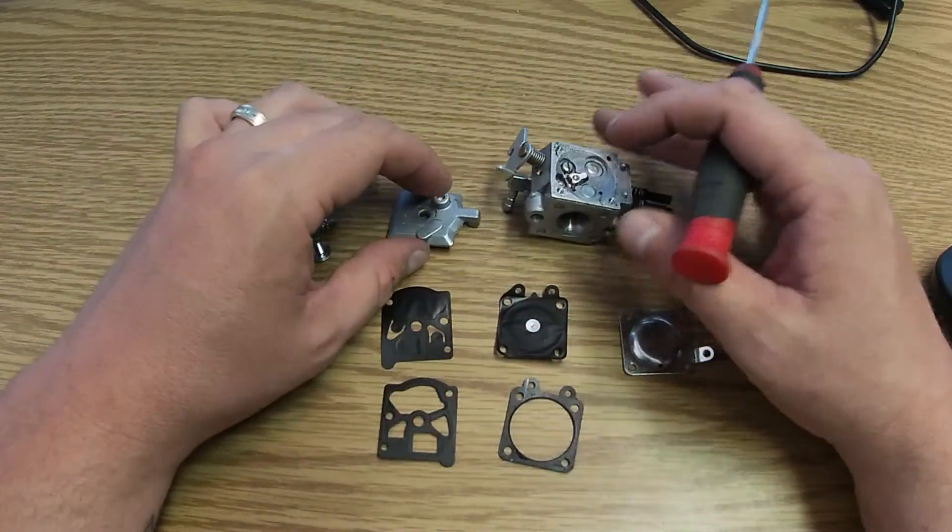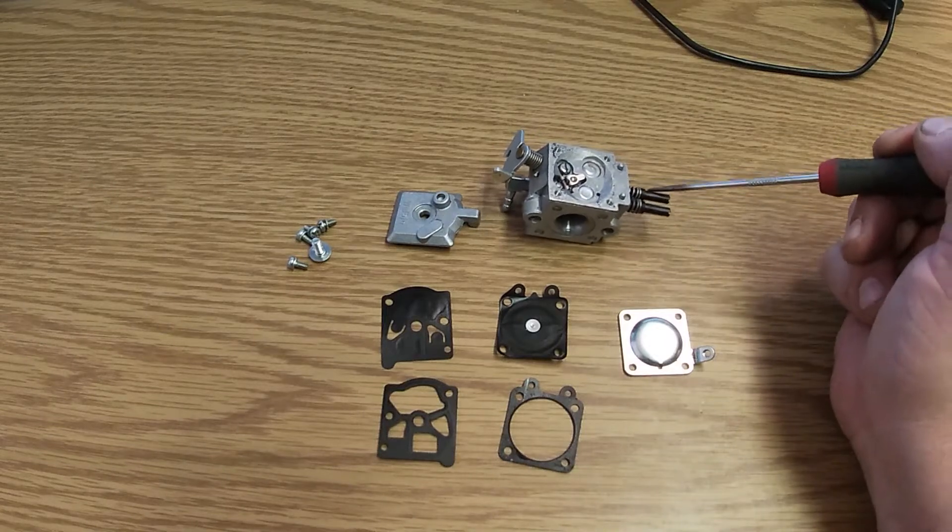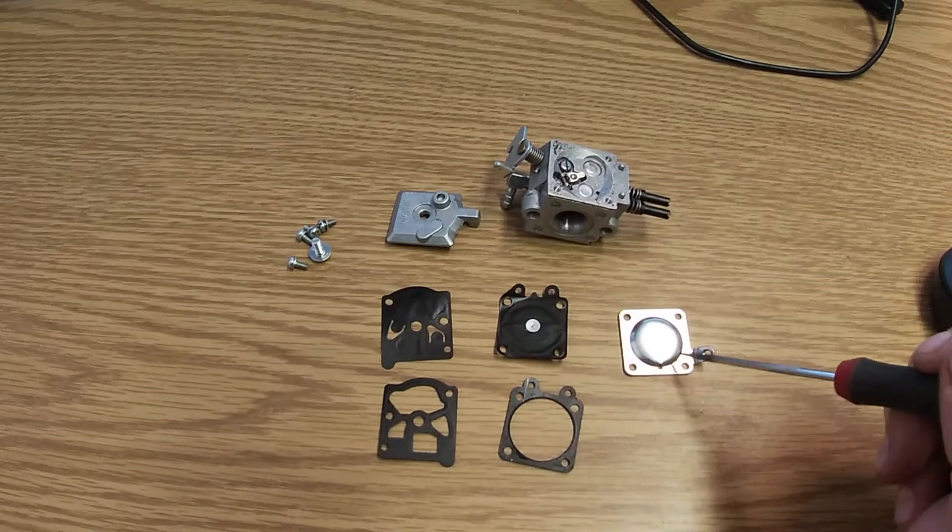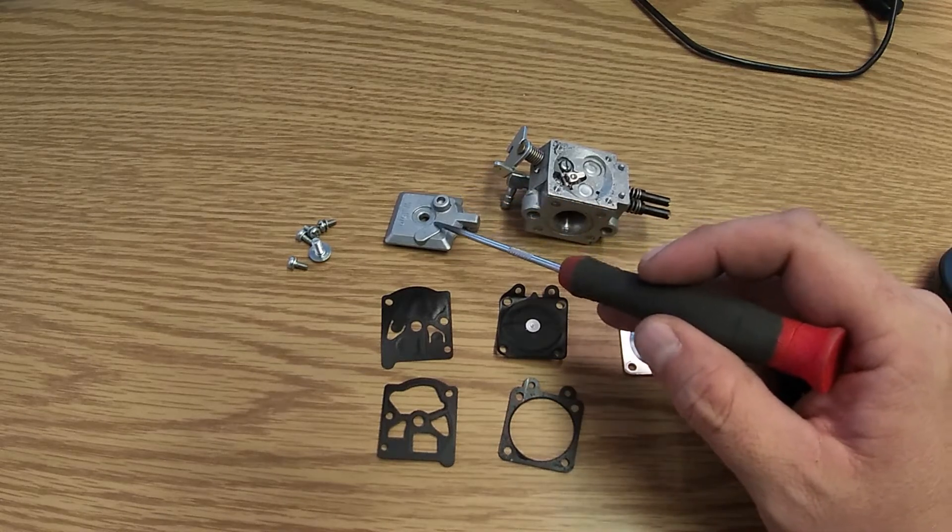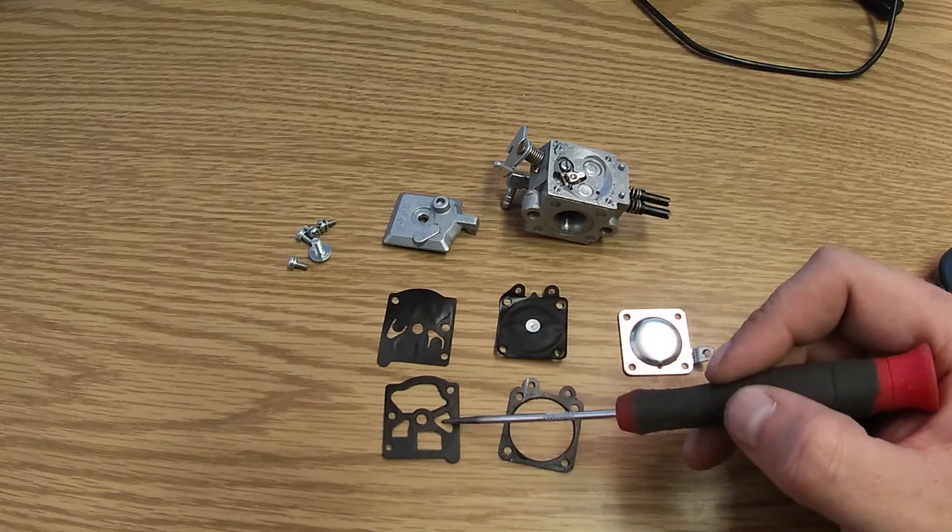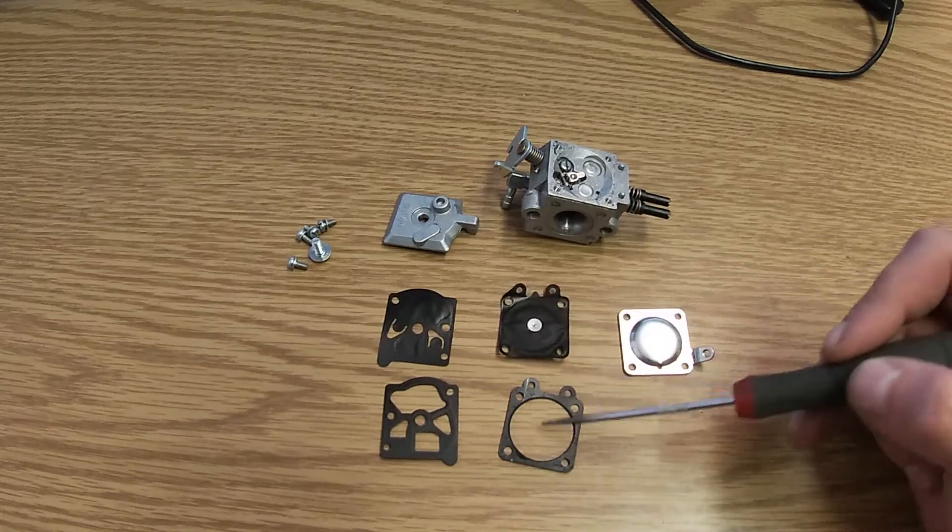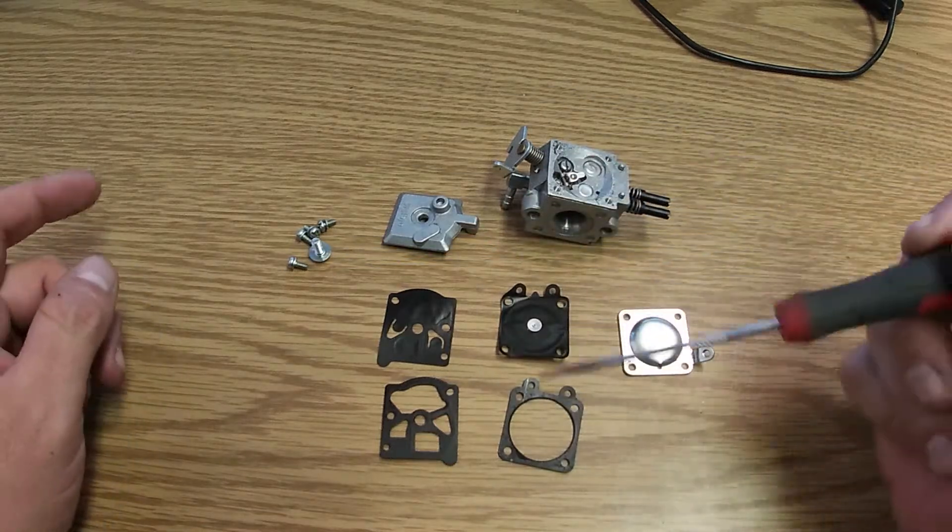Now looking at the carburetor parts, we've got the main body of the carburetor, we've got the high and the low, which I did not remove, we've got the metering diaphragm top, we've got the fuel pump diaphragm top, we've got the fuel pump diaphragm, fuel pump diaphragm gasket, metering diaphragm, metering diaphragm gasket, and the bolts to require to put this back together.